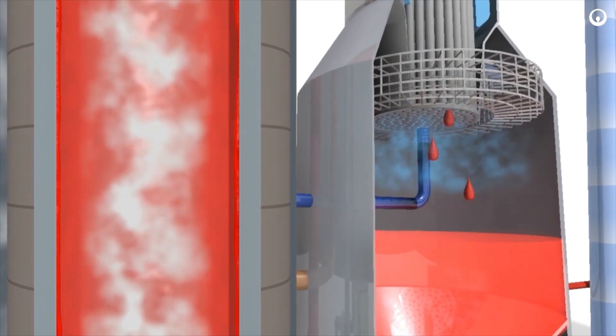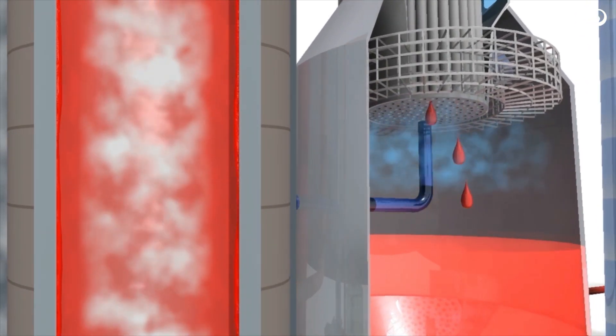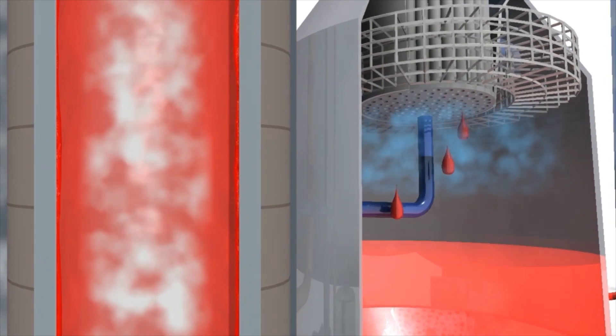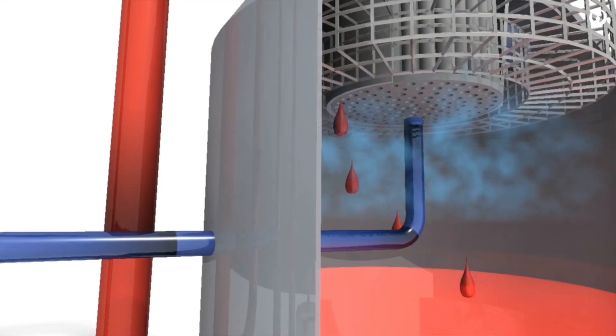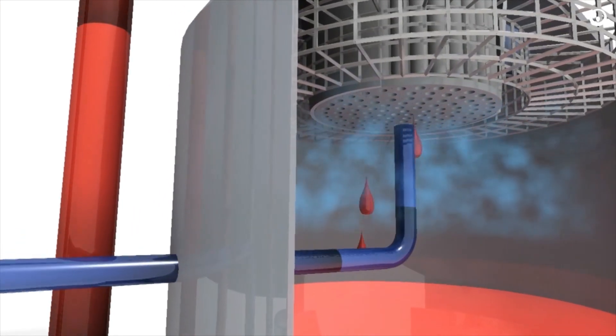For the brine that reaches the sump as liquid, it recombines with the brine already in the sump as well as new feed brine coming into the sump from the deaerator. That mixed volume will then recirculate back to the top of the tube and shell.